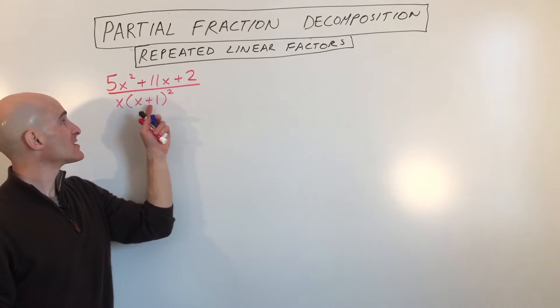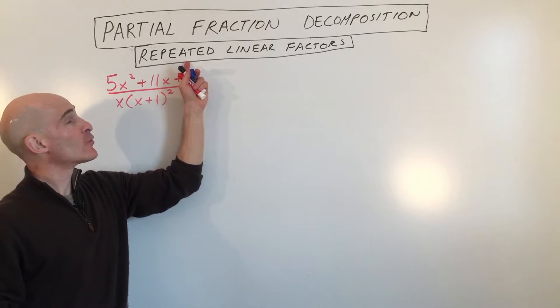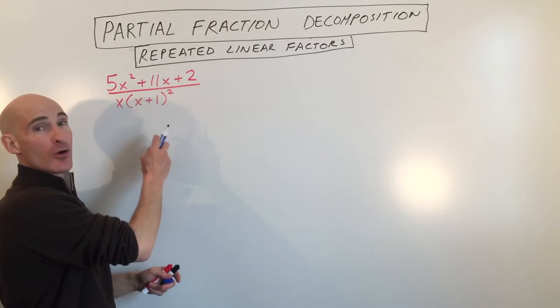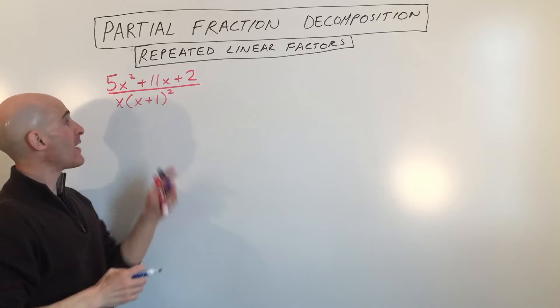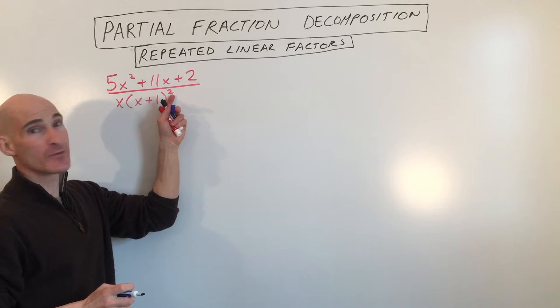Okay, so linear. What's linear? Linear means it's a first degree. See, x to the first. And repeated means that it's to a higher power than one, like squared, cubed, to the fourth power. It means you have this factor repeated.